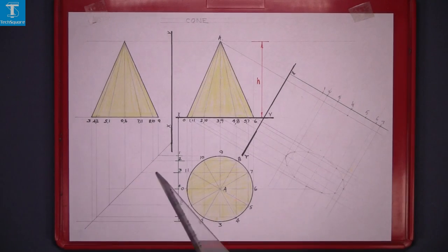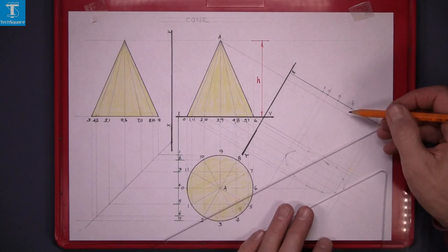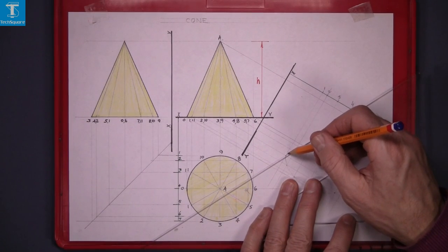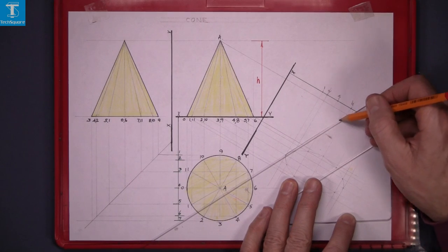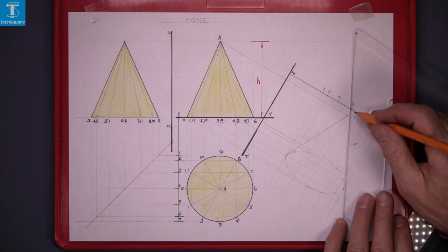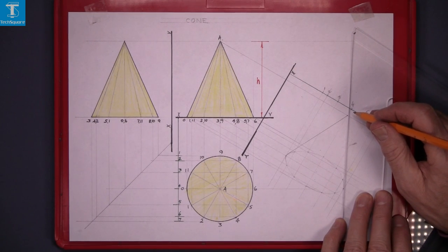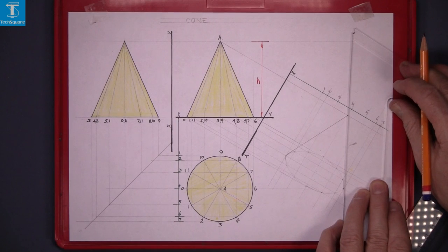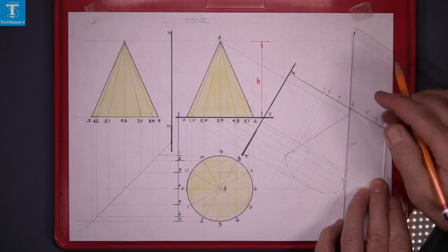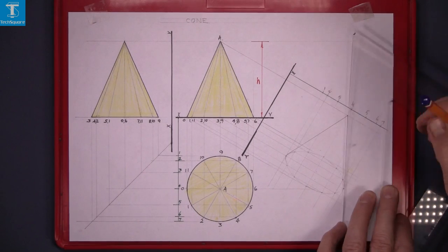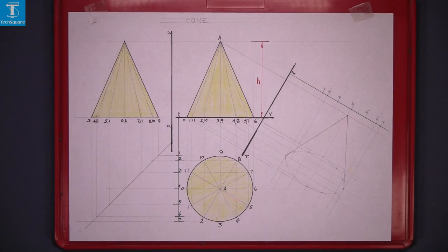Now join A to the circle as a tangent just to touch the curve. And the same on the other side, a tangent to the curve.